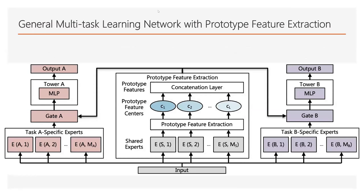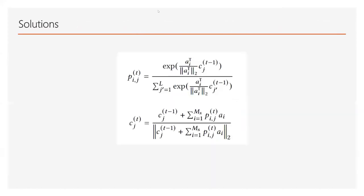Motivated by feature extraction strategies applied in graph convolution networks, we propose a novel prototype feature extraction for multi-task learning. To extract features, we propose a concept of a prototype feature center. Suppose there are L latent groups of features. We introduce L prototype feature centers to disentangle the feature space, and we define C as the prototype feature centers. The problem turns to be one of learning these centers and assignments to these centers. Motivated by the EM algorithm for clustering, we propose a two-step algorithm to solve this problem. The probability that the output of each shared expert belongs to the G prototype feature clusters and cluster centers are learned iteratively.